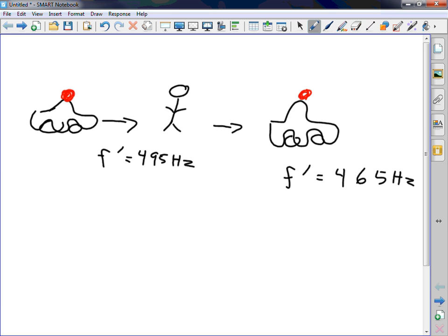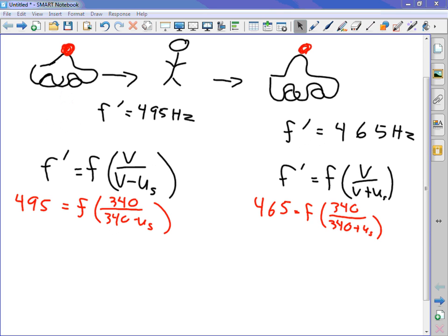System of equations. This will be a system of equations problem. You know the velocity of sound in air, take it to be about 340, right? You don't know two things: velocity of the police car and the original frequency. Luckily, you will have two different equations. One for coming towards and one for going away.